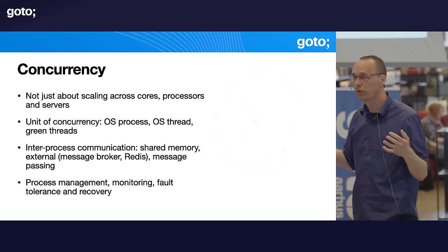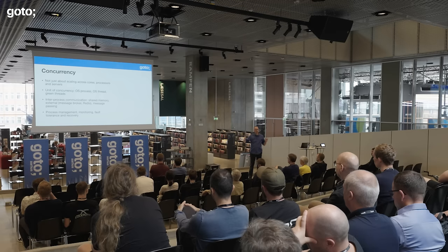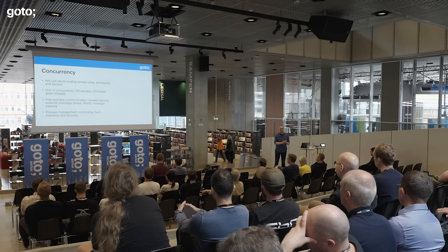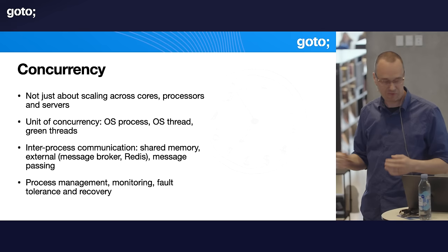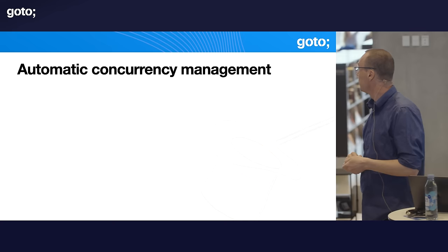You need to worry about process management, monitoring, fault tolerance, and recovery. You want to know what's going on inside your application. You may need to ensure that there is always exactly one copy of a certain process running across the cluster of machines hosting your application. All these decisions need to be made when writing a concurrent application. And if you as an application developer have to make and implement these decisions yourself, there's a potential for mistakes — and as we know, bugs can lead to vulnerabilities.